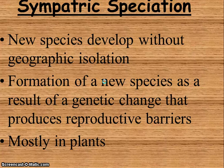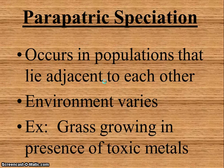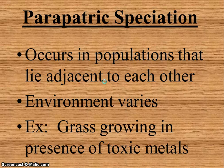Sympatric speciation is when a new species develops without geographic isolation — this typically happens in plants, and it's the formation of a species as a result of genetic change that produces reproductive variables. Parapatric speciation occurs in populations that lie adjacent to each other where the environment varies — an example would be grass growing in the presence of toxic metals. There will be a part two of this PowerPoint to continue, and we'll take any questions tomorrow, so please watch part two.